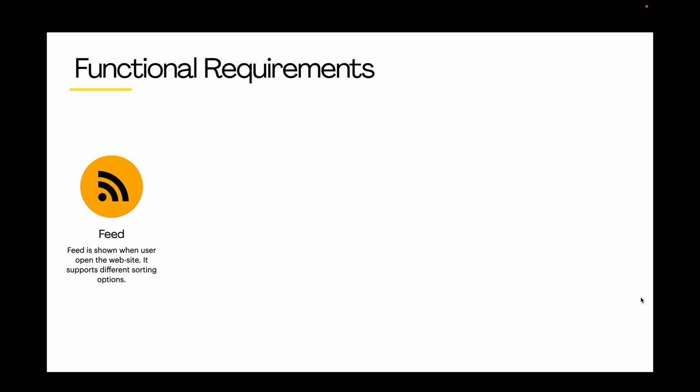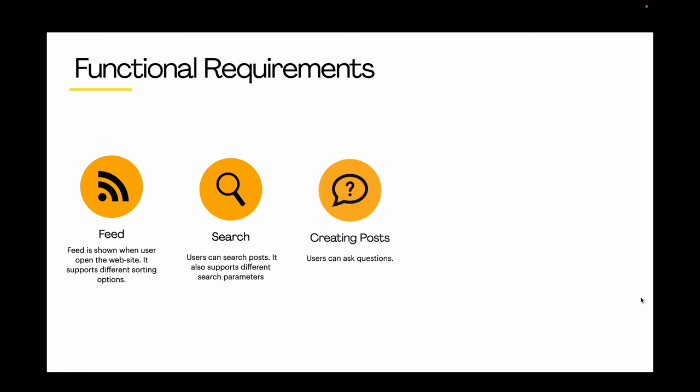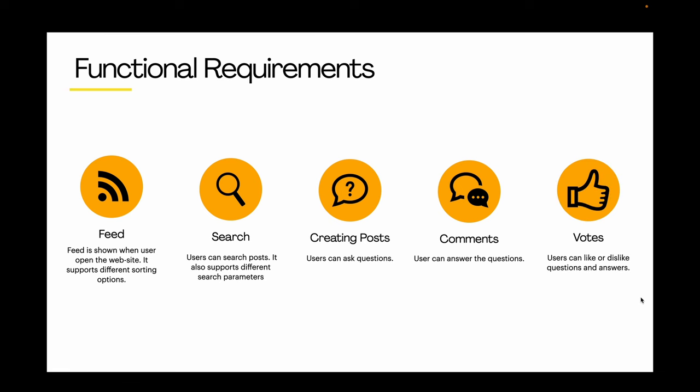Functional requirements are: Feed – the feed is shown when the user opens the website and supports different sorting options. Search – users can search posts with different search parameters. Creating posts – users can ask questions. Comments – users can answer and comment on questions. And votes – users can like or dislike questions and answers.